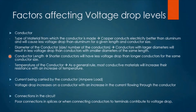The temperature of a conductor can also affect the voltage drop level. The higher the temperature of a conductor, the higher the resistance, which means an increase in voltage drop. The second main factor that can affect voltage drop is the current carried by the conductor — voltage drop increases with the increase of current flowing through the conductor.